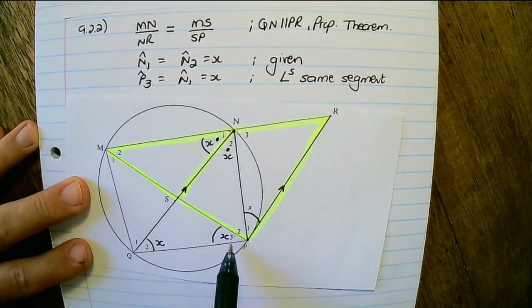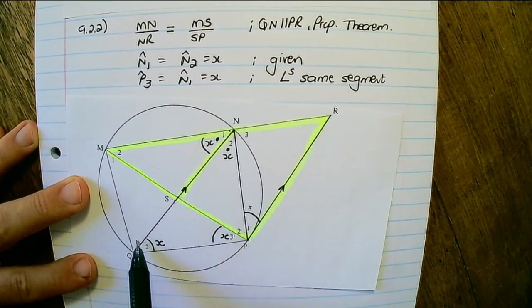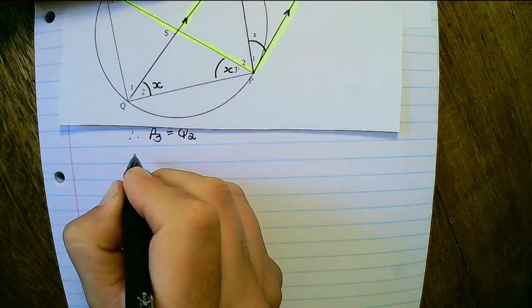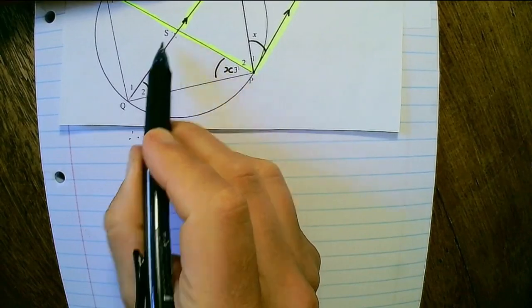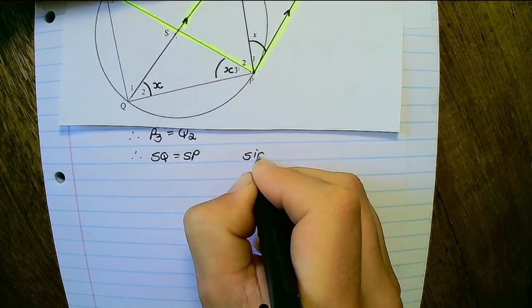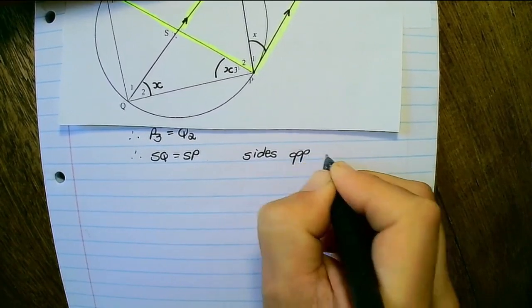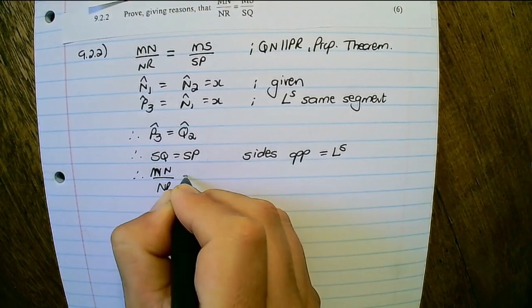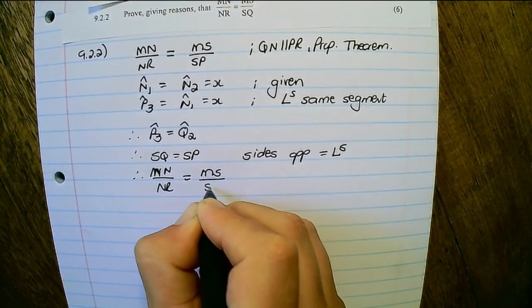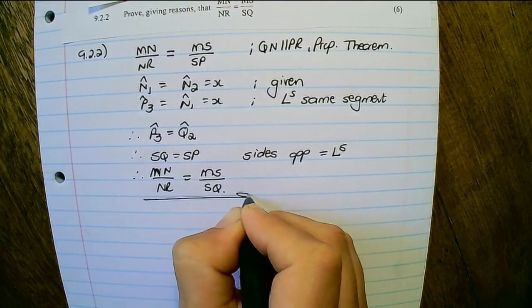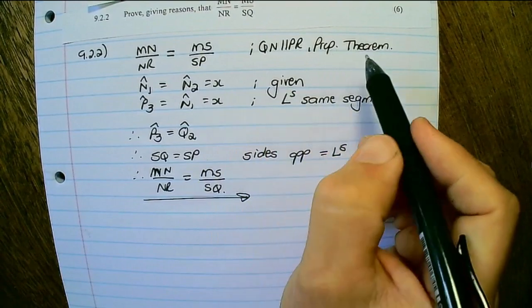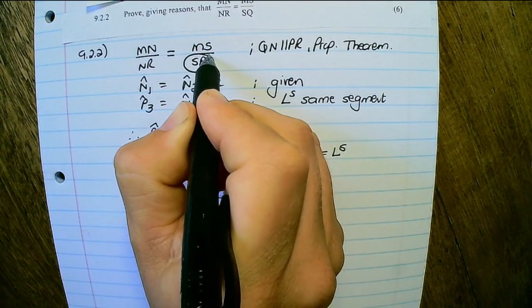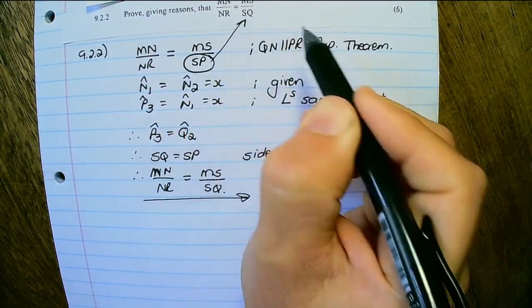And now we have proven that P3 is equal to Q2. And because these two angles are equal we can conclude that SP is equal to SQ. And it will be sides opposite equal angles. Therefore MN over NR would be equal to MS over SQ.